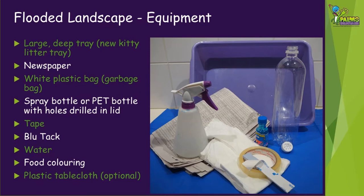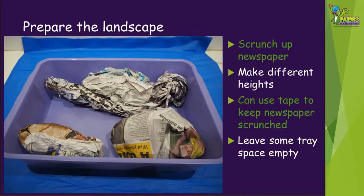To simulate some rainfall you'll need a spray bottle, or a plastic bottle like a soft drink or water bottle. Grill or punch some holes in the lid of the bottle to make the rain. You'll also need some tape and blue tack. To make the rain you'll need some water — it's useful to add some food colouring so it's easy to see where the rain goes. Since you'll be splashing around some coloured water, you might like to use a plastic tablecloth or shower curtain for easy clean up.